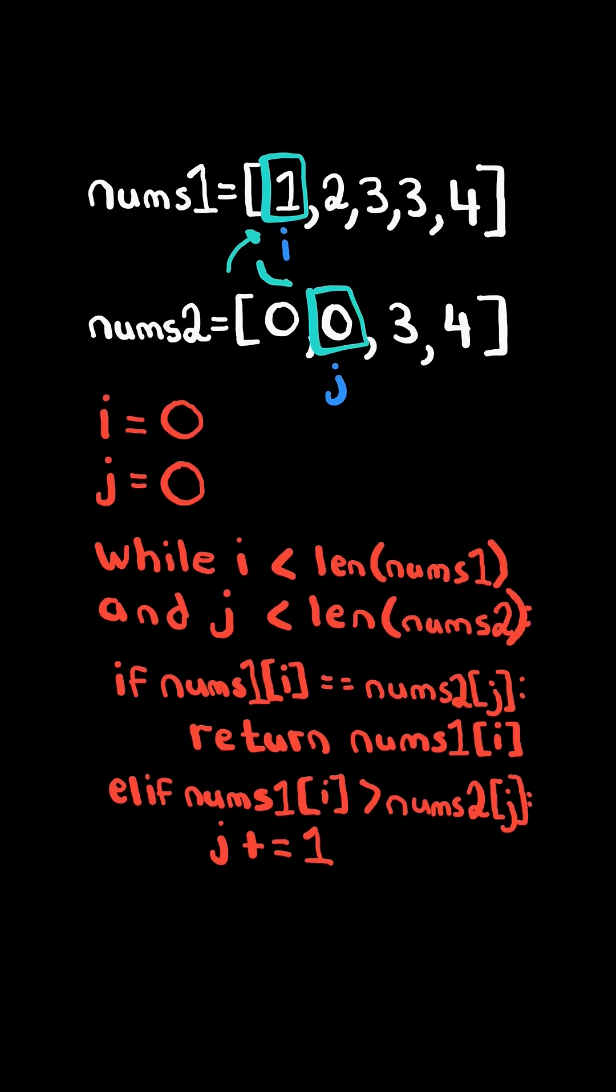Again, nums[i] is greater than nums[j], so we increment j. Now, nums2[j] is greater than nums1[i], so we increment i.